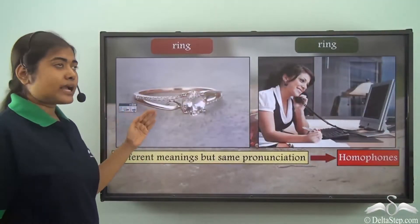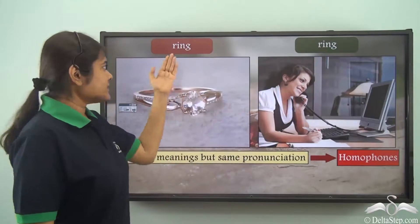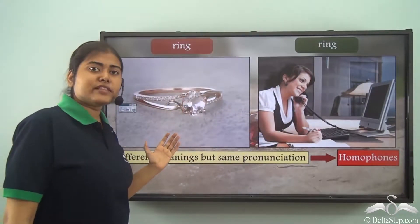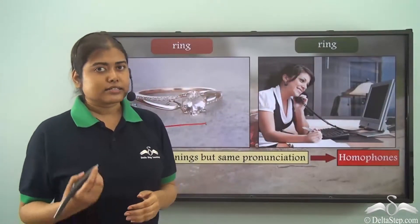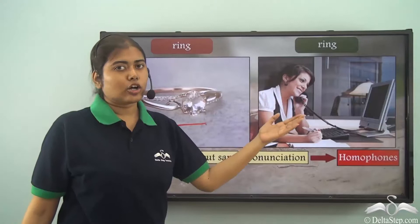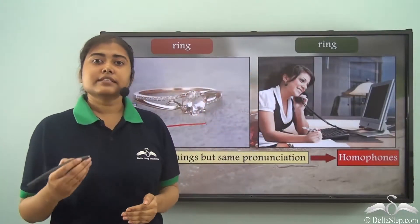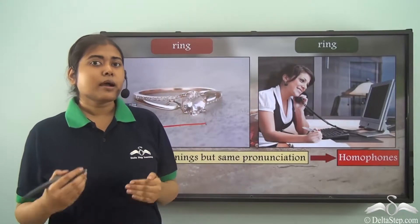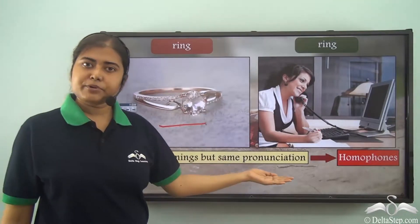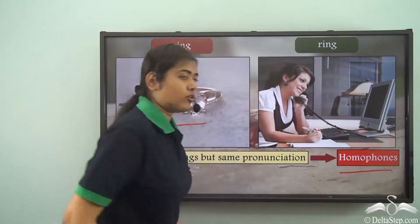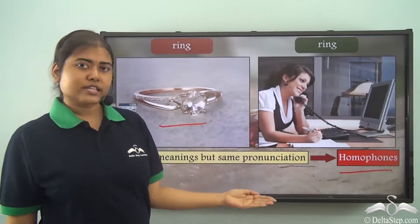Now let us look at these two words. What do we see? Ring and ring. This 'ring' refers to a piece of jewellery, and this 'ring' means to call somebody — as in this girl calling up someone. So these two words also have the same pronunciation but different meanings, and hence these two are also homophones. So ring and ring are homophones as well.